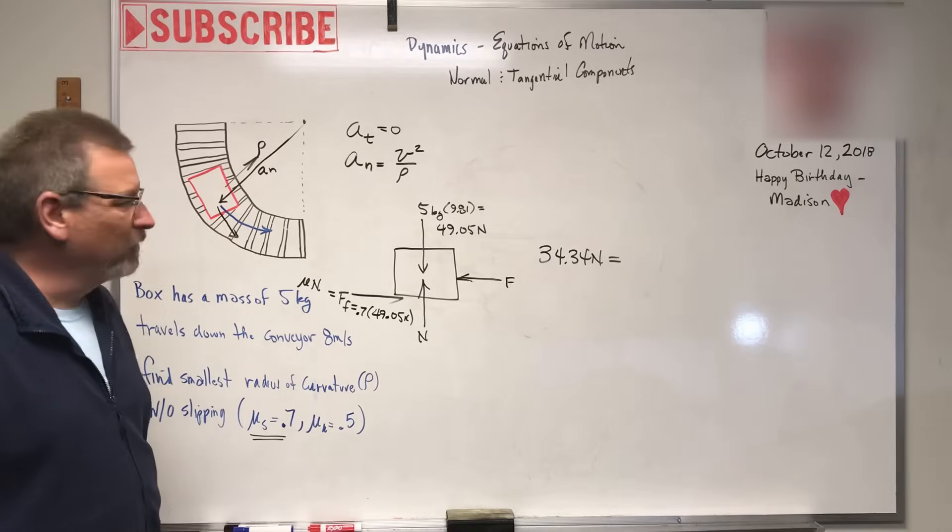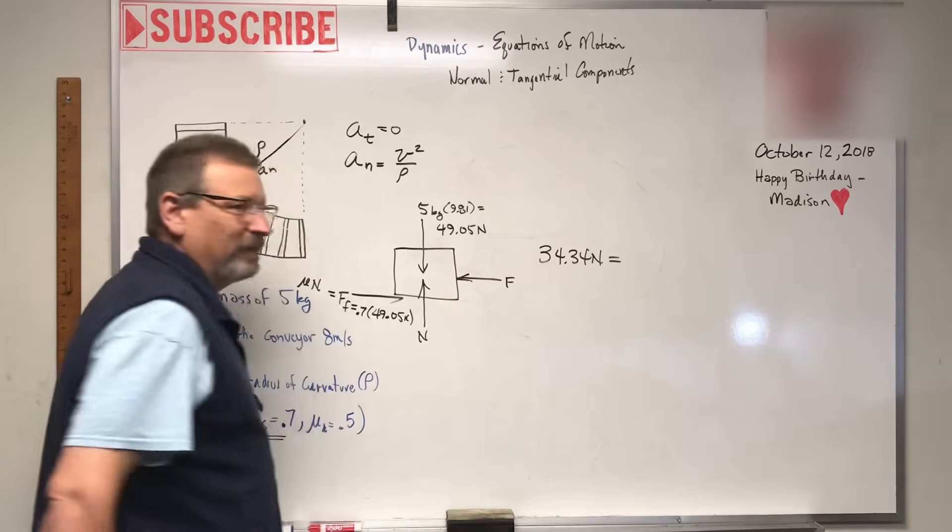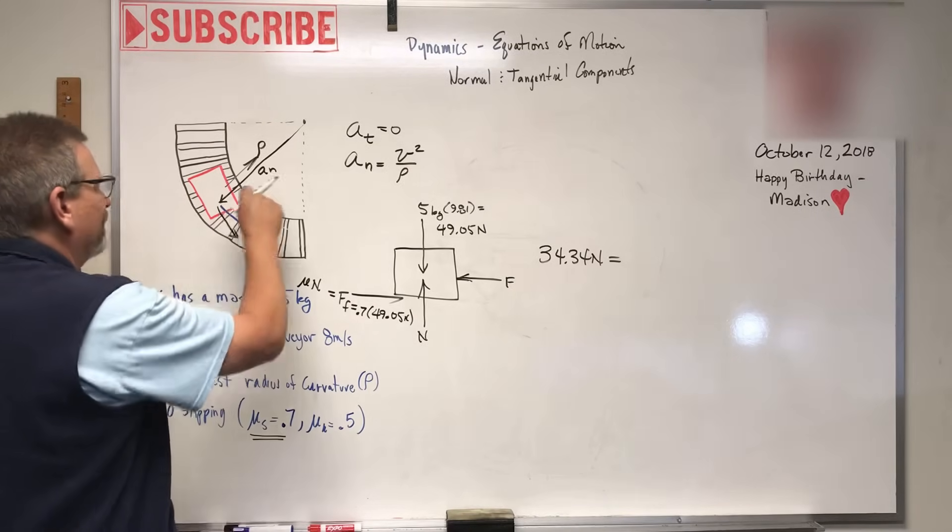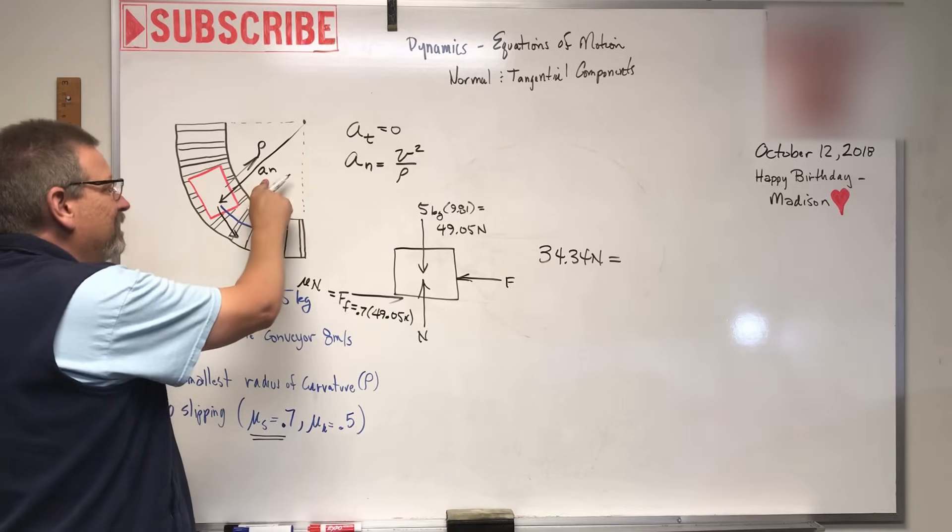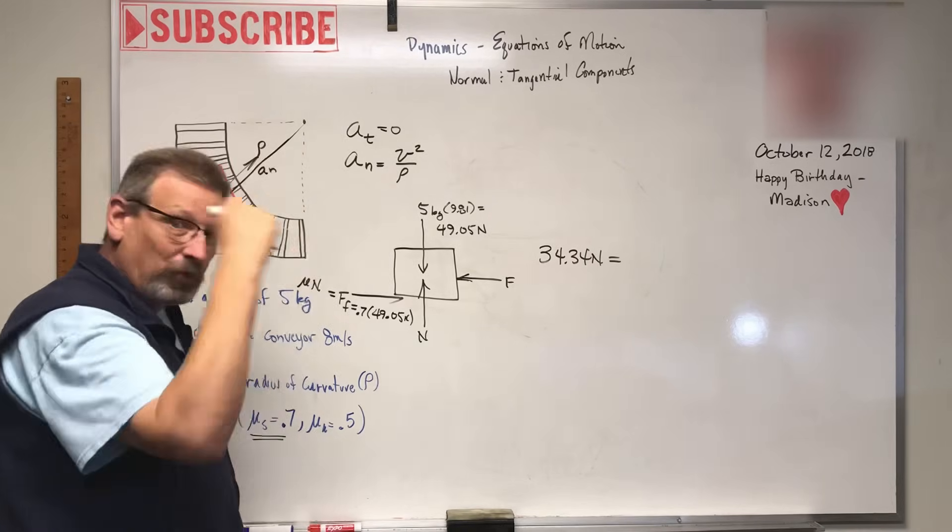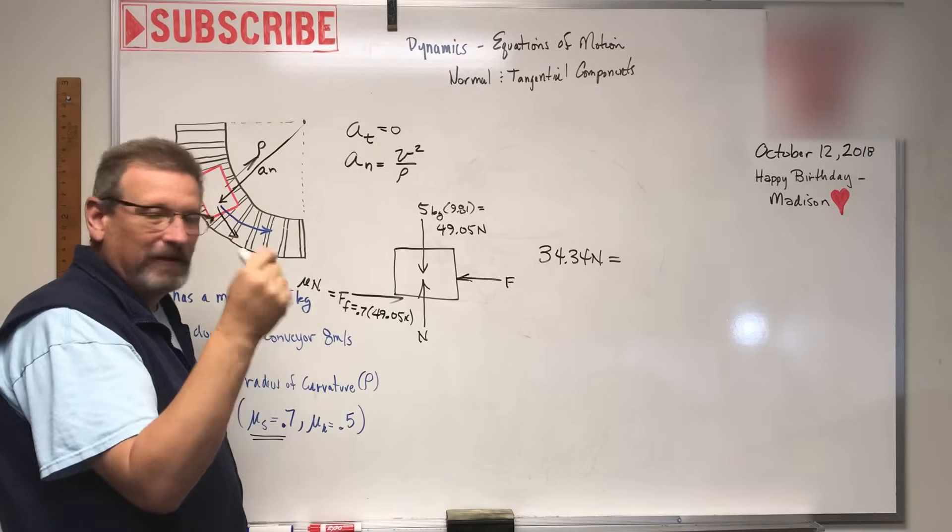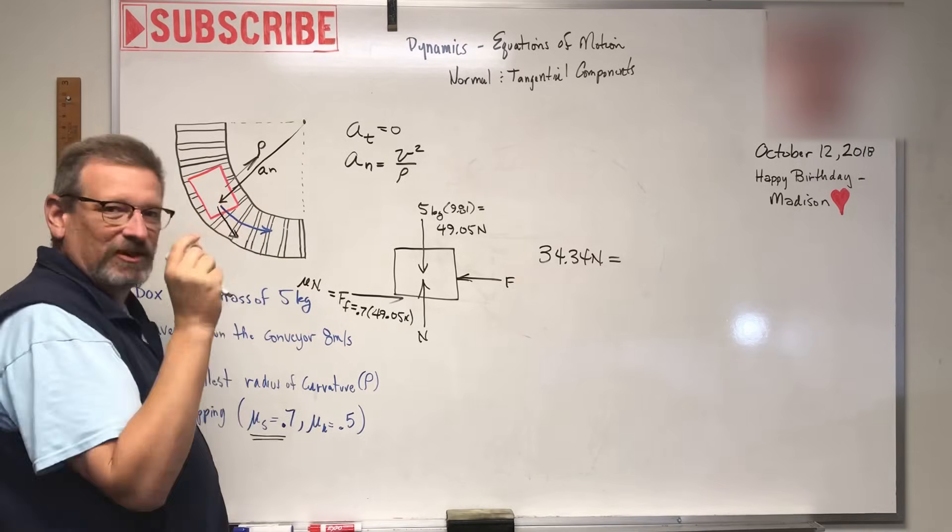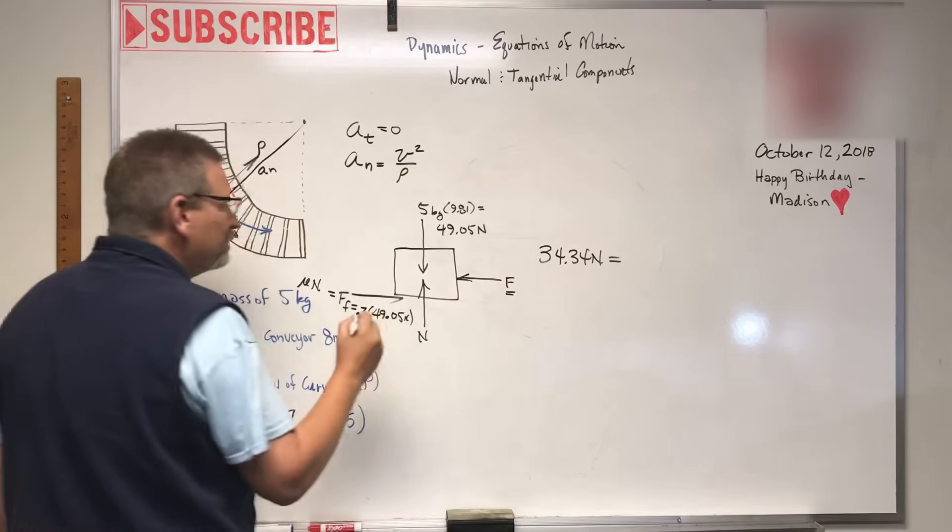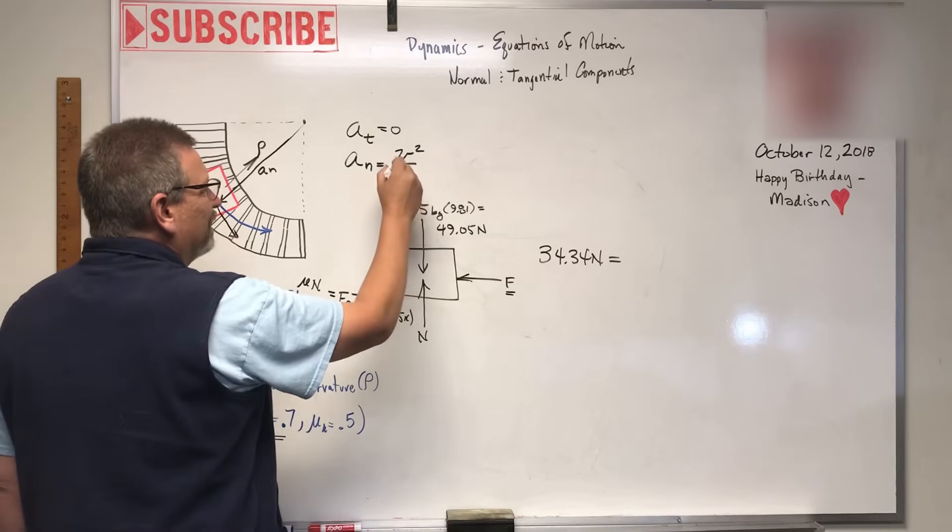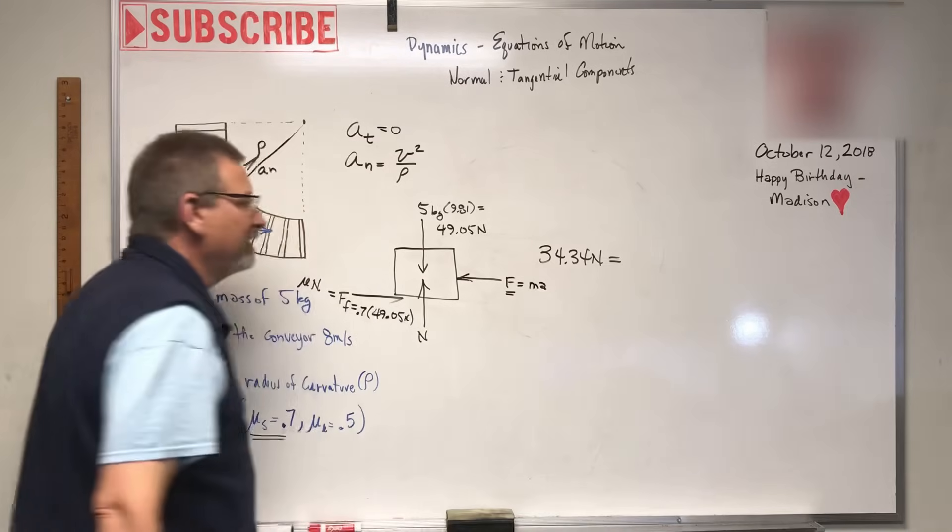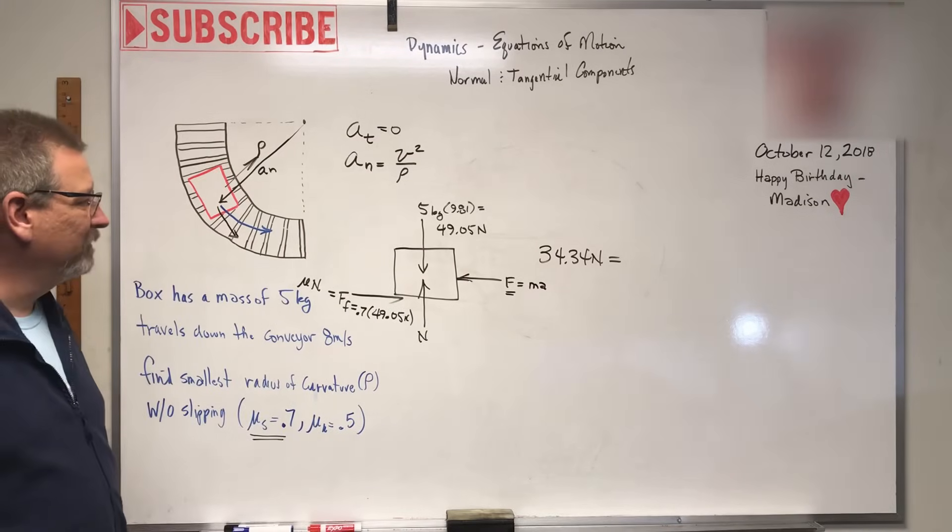Now since the box is moving, what do we know about something moving? How do we calculate the force on something that's moving? What's generating that force making it want to fly off? That normal acceleration is what's making that tension - it's going to create that guy right there. So that's going to be ma, mass times acceleration.